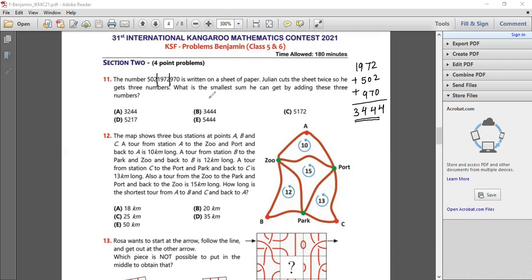So the smallest sum that we can get by adding these three numbers is B. So my answer is 3444. That's how we'll do question number 11.